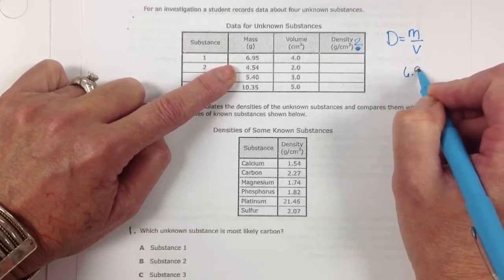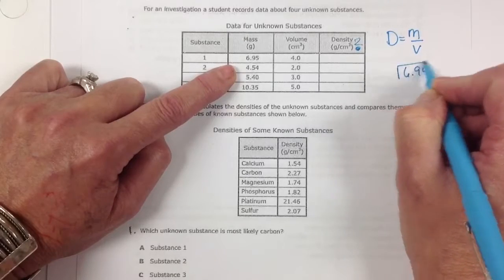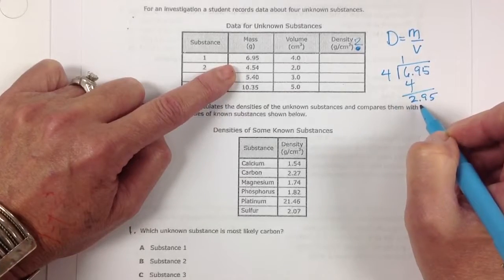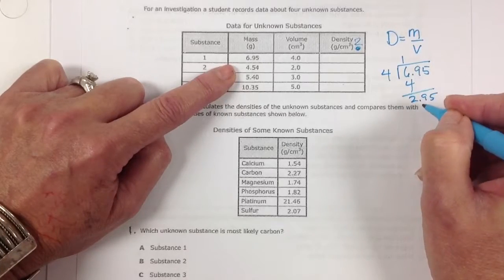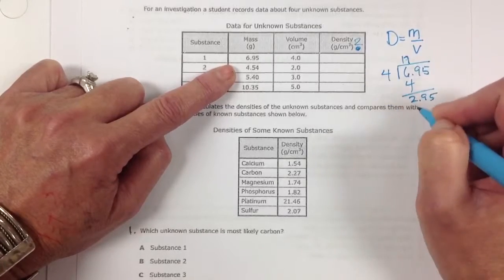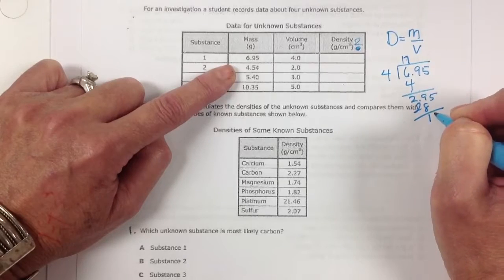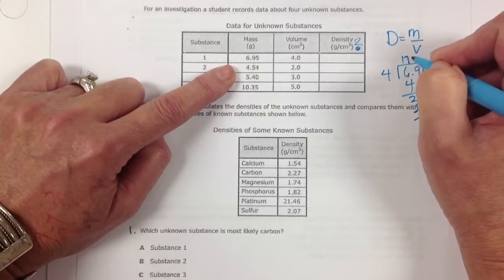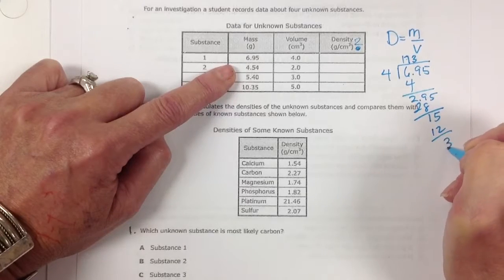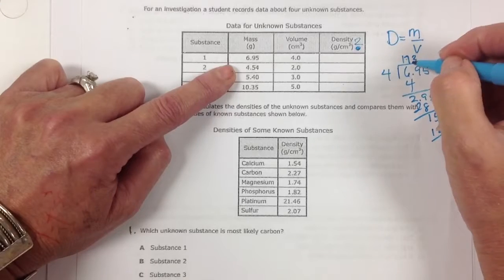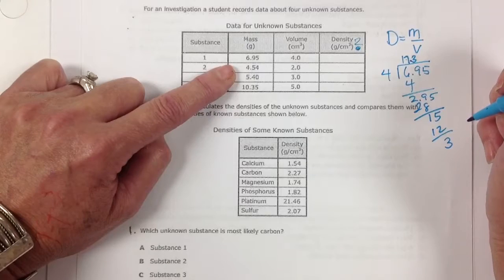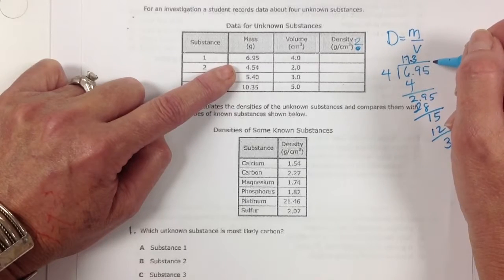So 6.95 divided by 4. So that leaves 2.95. So we just move the decimal and deal with it later. So 7 times 4 is 28. So 7 times 4 is 28. So that leaves 15. And that goes in 3. And then that would be 12 with the remainder of 3. So approximately 1.73.